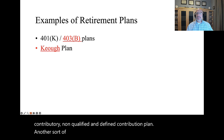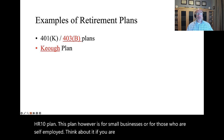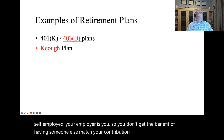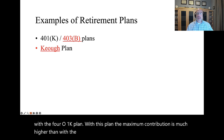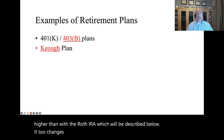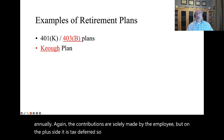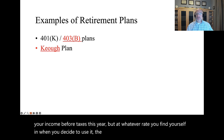Another sort of tax-deferred plan is the KEO plan, also called an HR-10 plan. This plan, however, is for small businesses or for those who are self-employed. If you are self-employed, your employer is you, so you don't get the benefit of having someone else match your contribution to a retirement plan like with the 401k. With this plan, the maximum contribution is much higher than with the Roth IRA — recently it had a maximum of $49,000 annually. The contributions are solely made by the employee, but on the plus side, it is tax-deferred. The KEO plan is discretionary, contributory, non-qualified, and defined contribution.